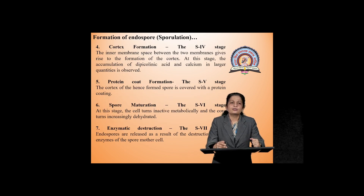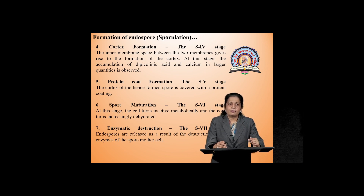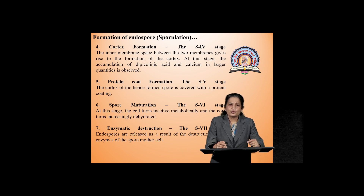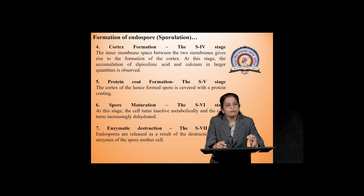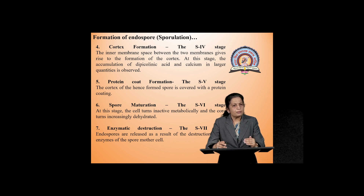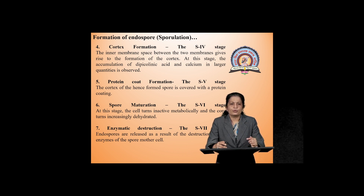The fourth step is cortex formation. The inner membrane space formed between the two plasma membranes gives rise to the formation of the cortex. In this cortex there is accumulation of a specialized compound of the endospore — dipicolinic acid — and calcium. As a result, the calcium salt of dipicolinic acid is present inside the cortex in very large amounts. The fifth step is protein coat formation: the cortex of the hence-formed spore is covered with the protein coat, and the final protein coat layer is formed.